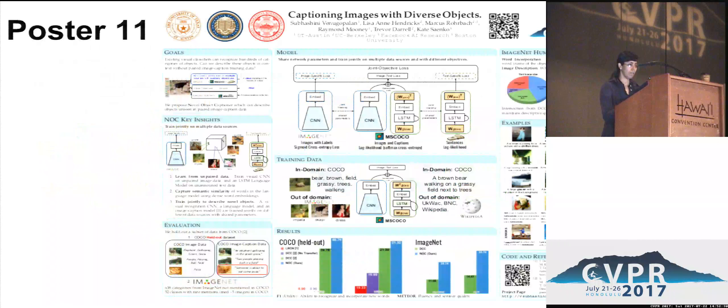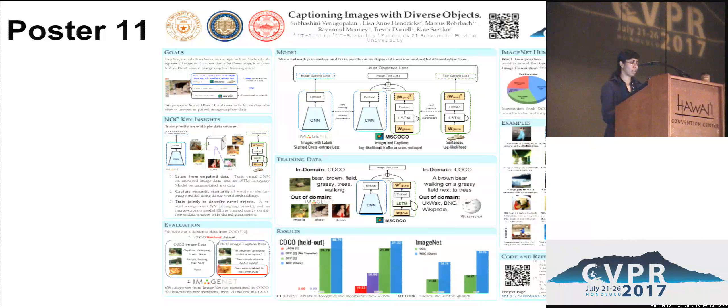The key takeaway from this work is that when we use both semantic embeddings and train a model jointly on multiple different data sources, we are able to caption hundreds of categories of objects in context. Please come by our poster, which is poster 11 later today. There is also other work at CVPR looking at the same task, including work by Microsoft Research Asia in the poster session. Thank you.